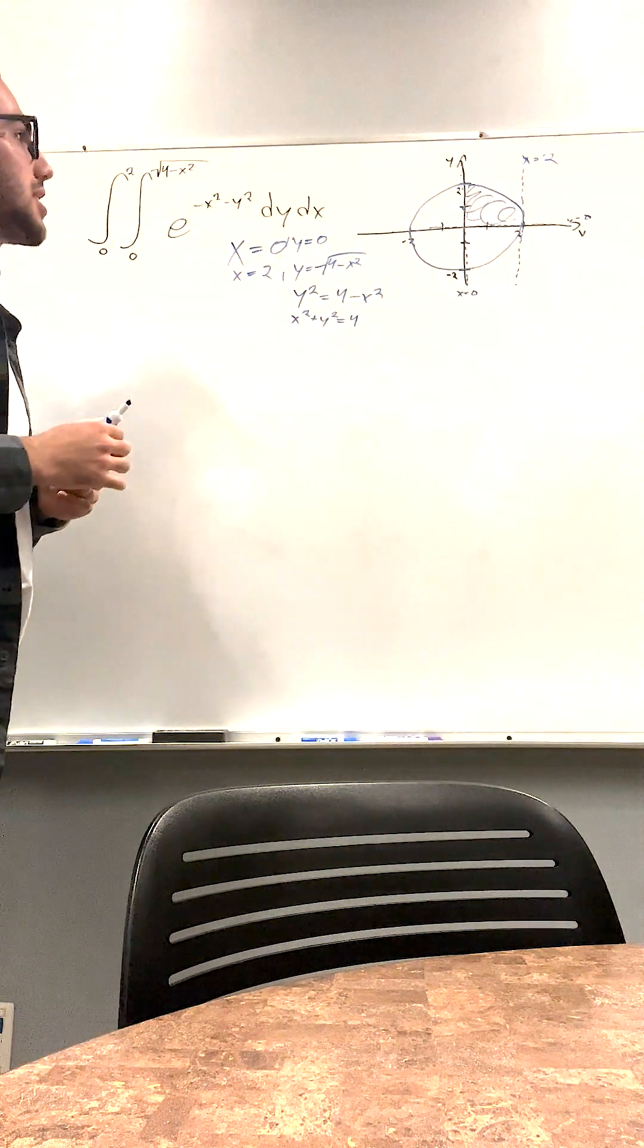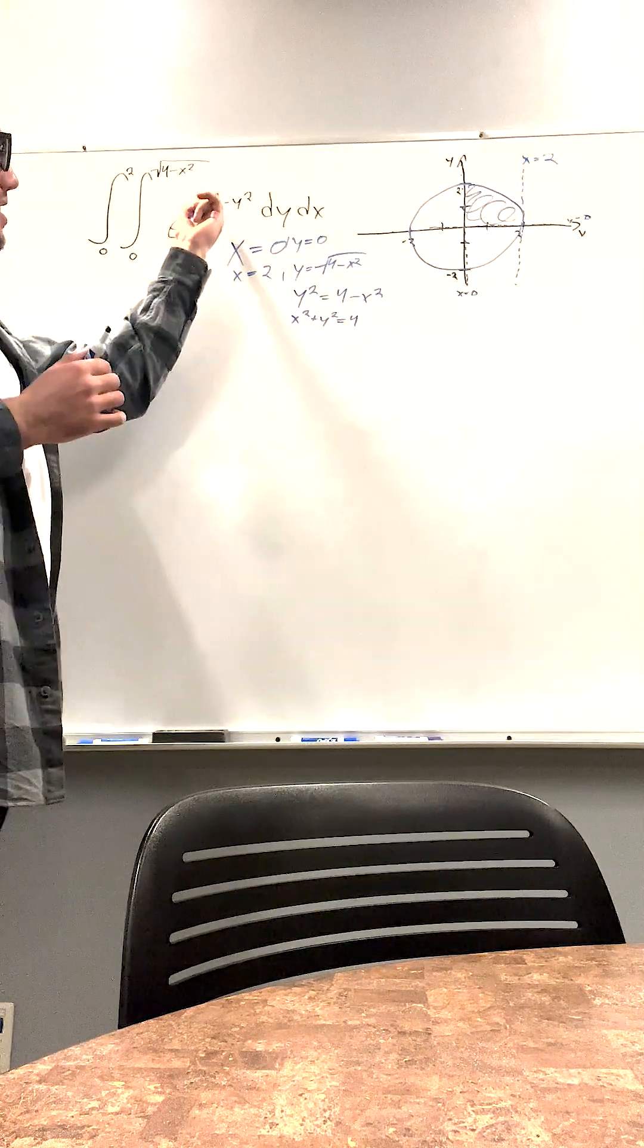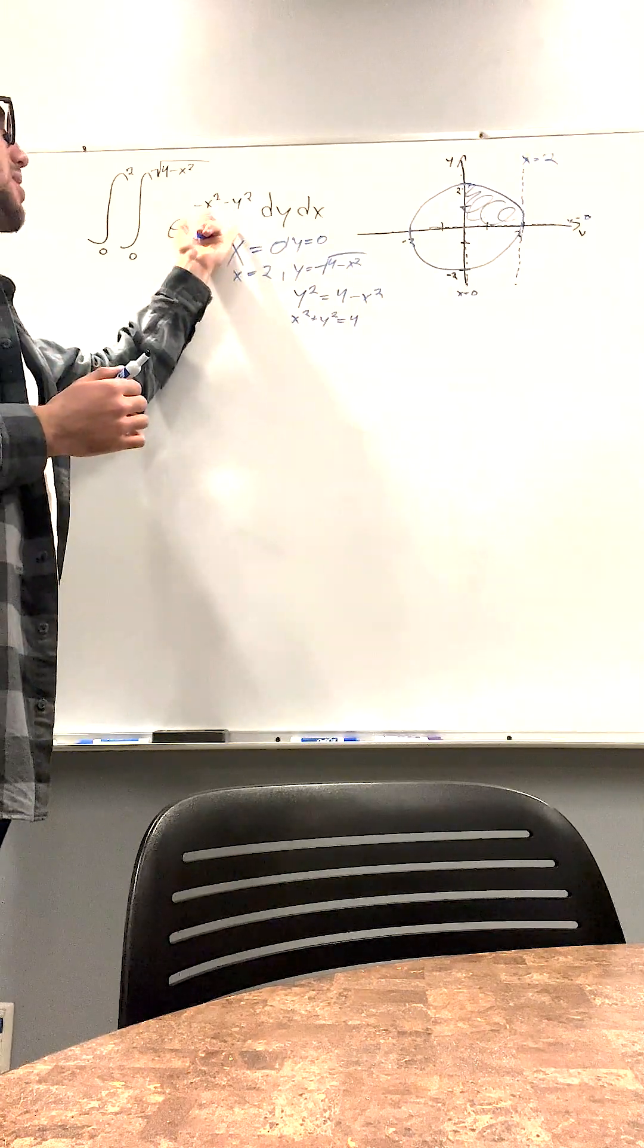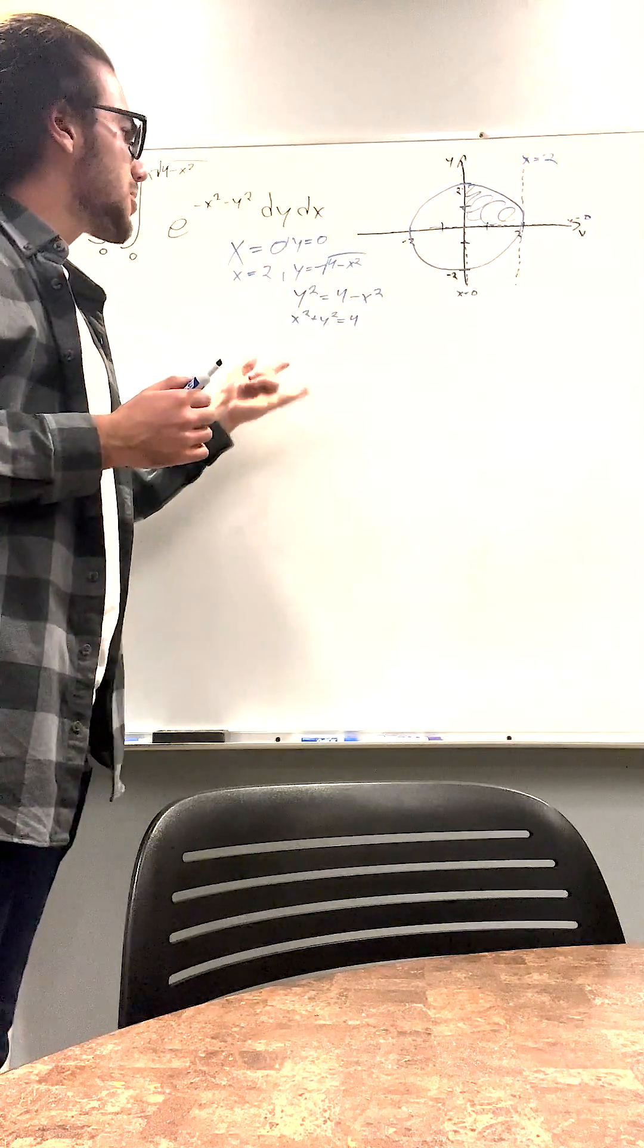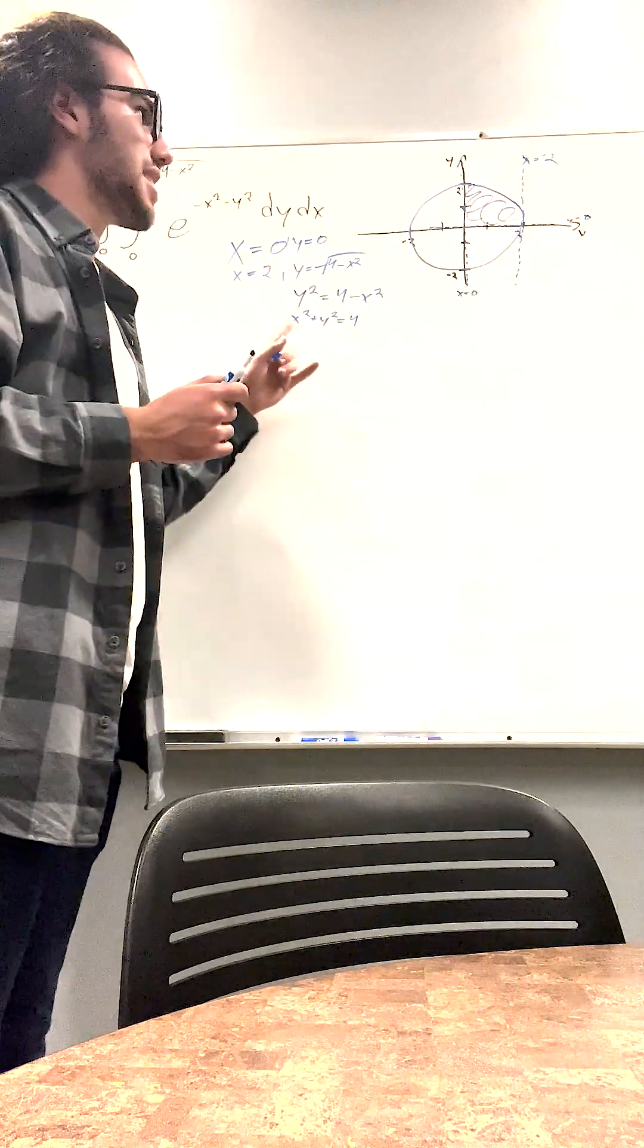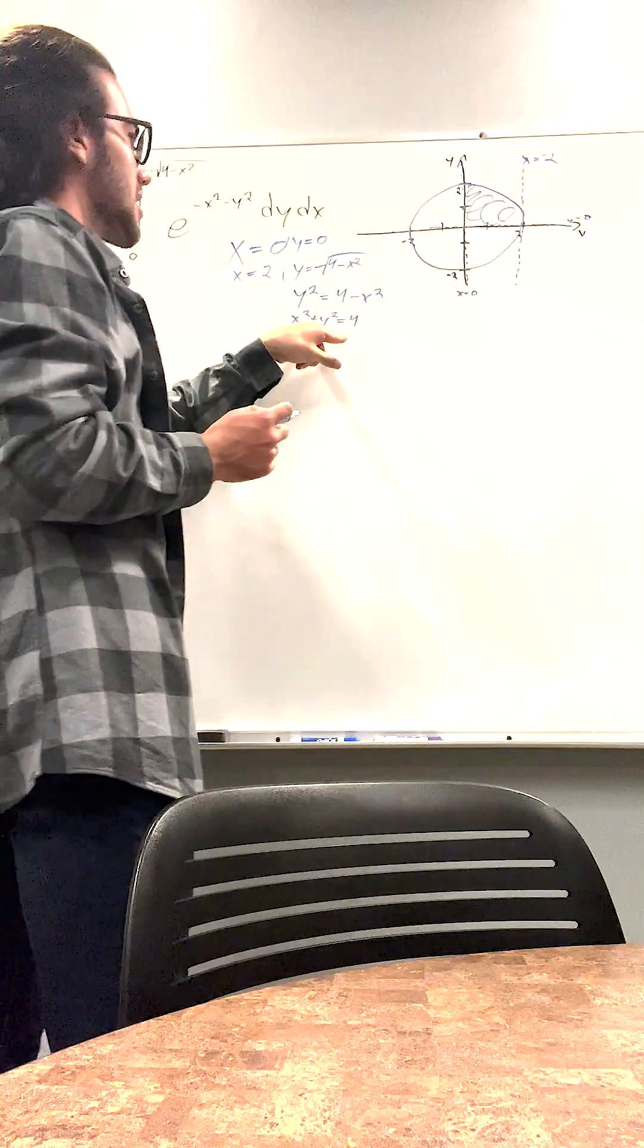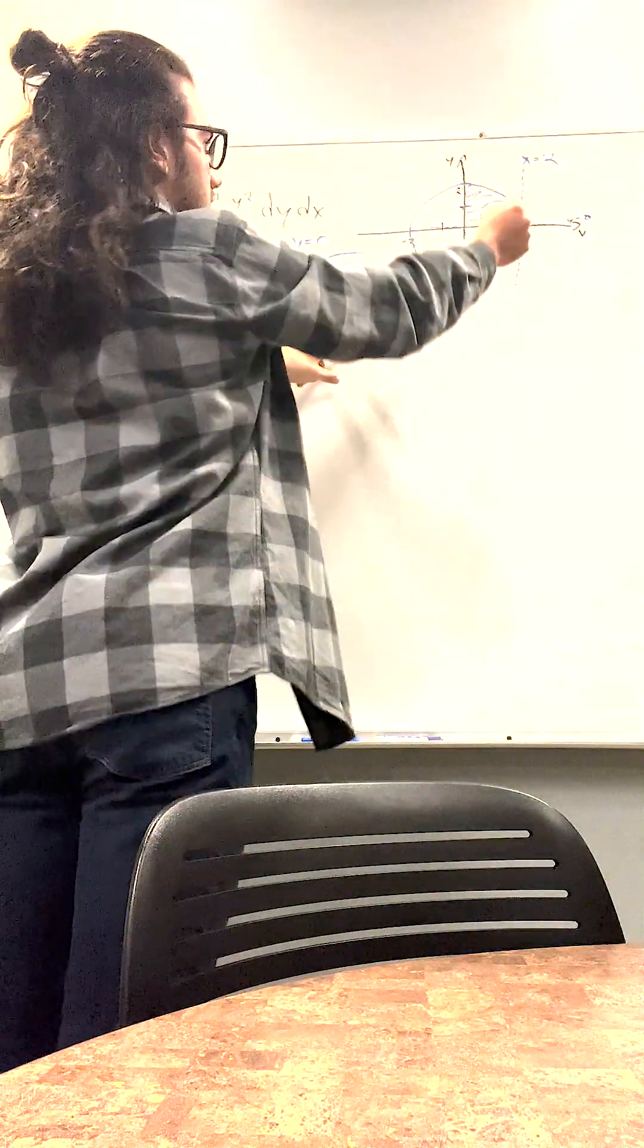But if you notice, we have this in terms of x and y but we're solving in terms of r and theta. So we need to find what r and theta is for these things. So we start with this. This is basically the radius of our circle.